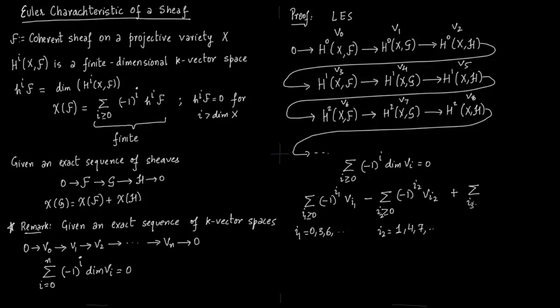And then the third is i_3 which is the third column corresponding to sheaf H. So this third column is nothing but i_3 is V_2, V_5, V_8, V_11 and so on. So i_1, i_2, i_3 all three are moving with a difference of 3.